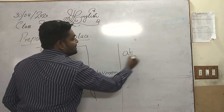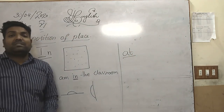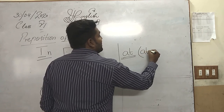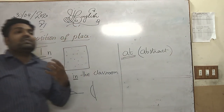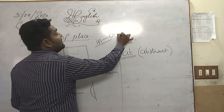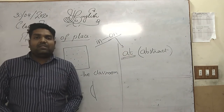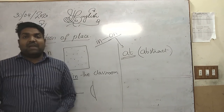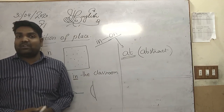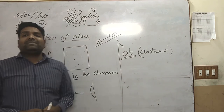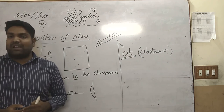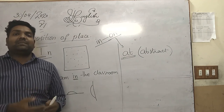The third word is 'at'. We use 'at' when we are talking about a specific place. When we cannot judge whether something is 'in' or 'on', we use 'at'. For example, I am standing at the door — not in the door or on the door, because there is no specific boundary. Similarly, if you go to the reception area, you say 'I am at the reception', not 'in the reception' or 'on the reception'.